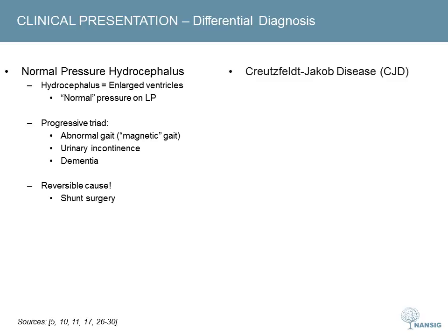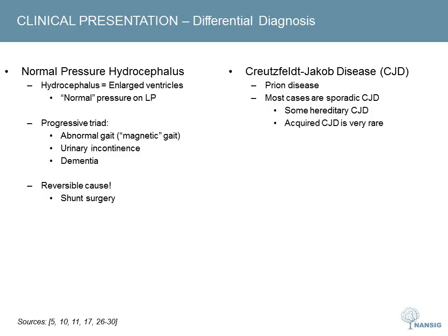CJD is a prion disease which typically causes rapidly progressing dementia. Most cases are sporadic CJD with no known risk factors. A small minority are hereditary CJD caused by genetics. Acquired CJD is extremely rare but has been associated with contaminated medical instruments or exposure to infected tissue. In addition to severe cognitive dysfunction, CJD patients often develop myoclonic jerks and report sensory symptoms.